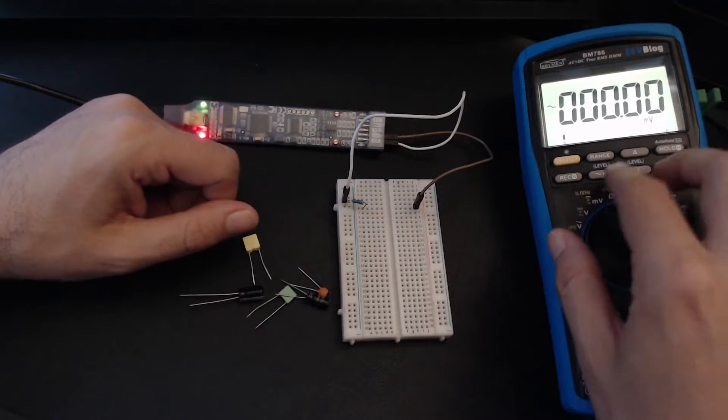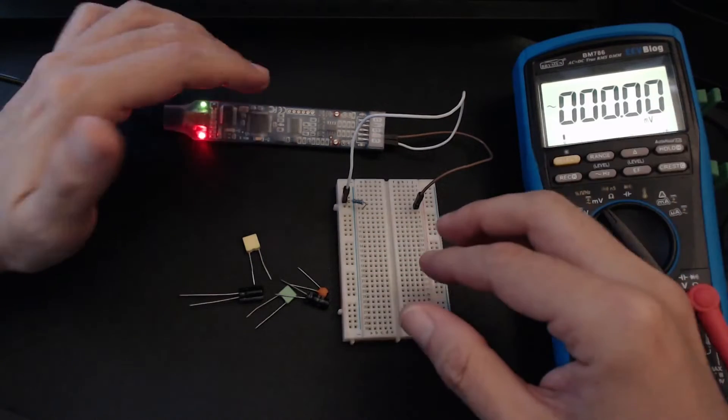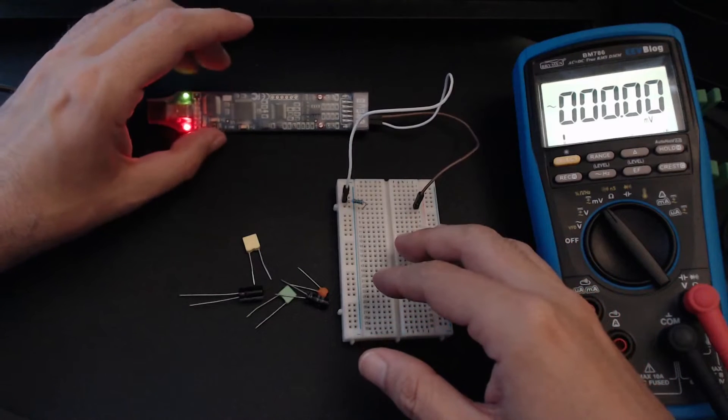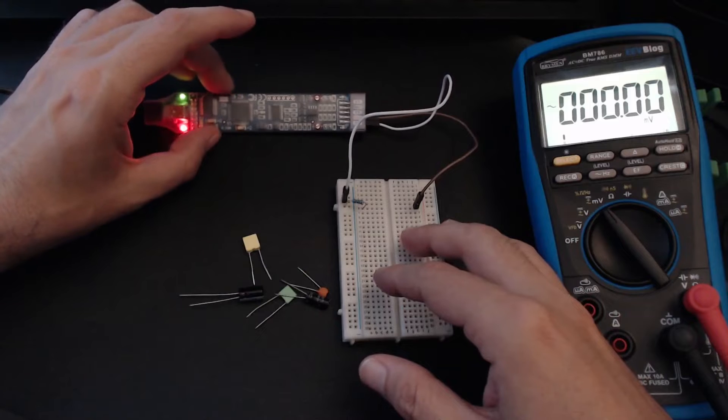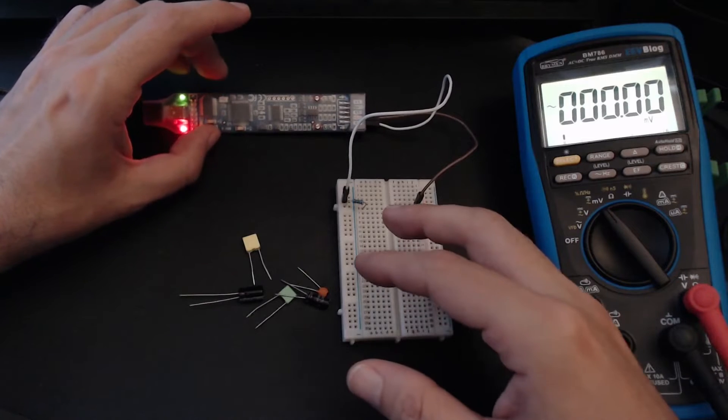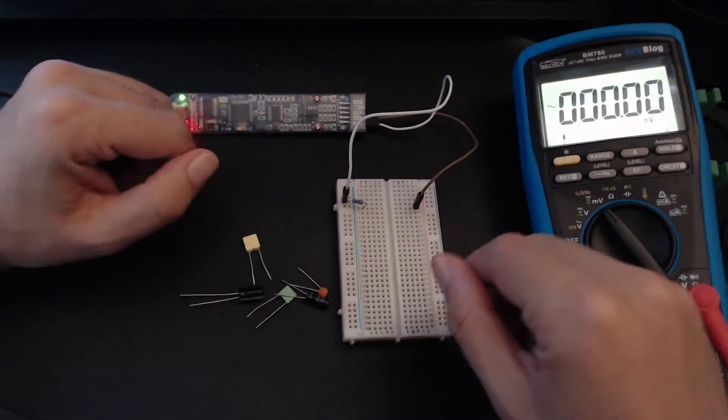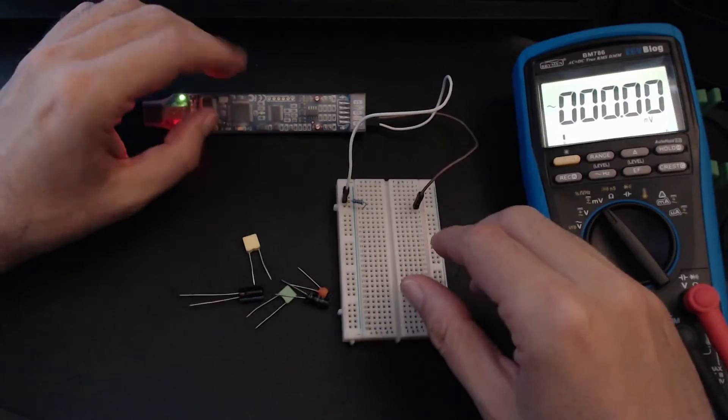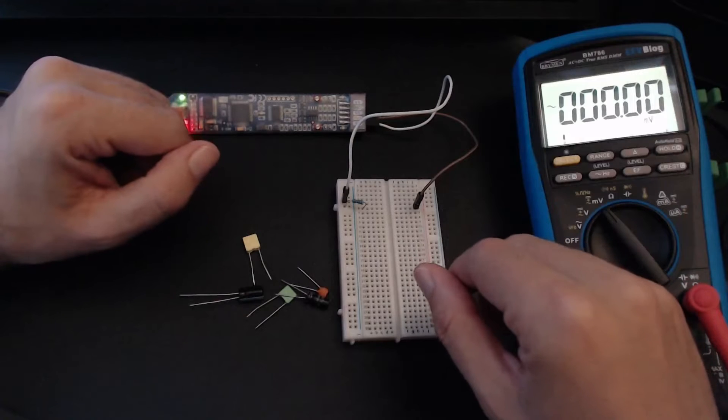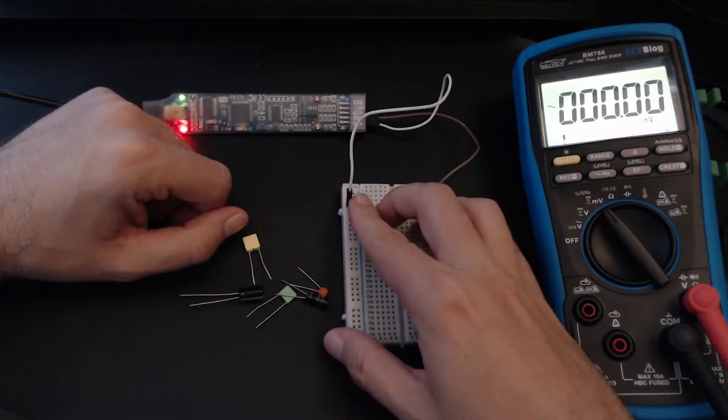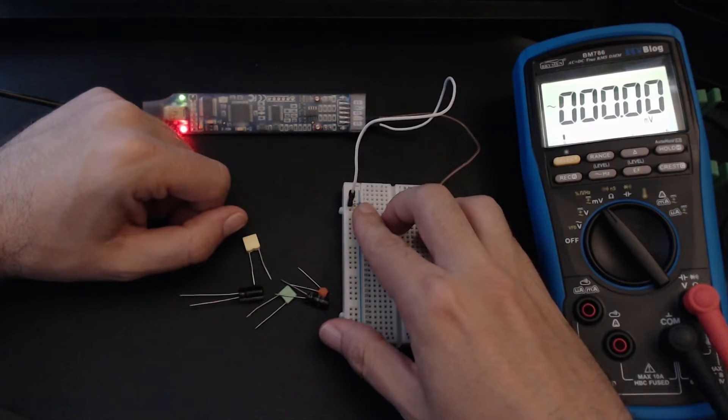On the signal generator front, nothing special. I have a USB scope here with a waveform generator. We'll use it to generate sine waves zero to one volts from 50 hertz to 7 kilohertz. As long as you have anything that can generate that range of frequencies, it should be fine.